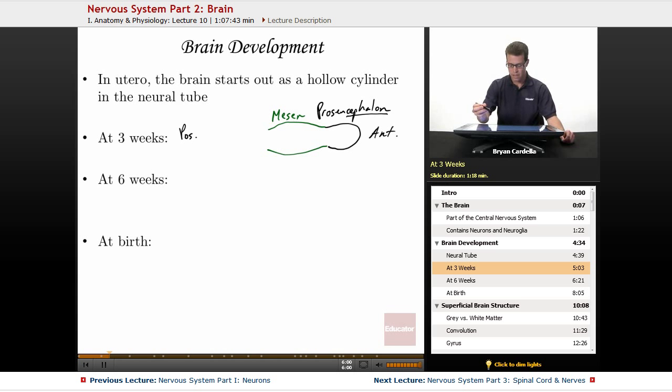And then finally, at the back end, the posterior part, this is the rhombencephalon. And that's at three weeks. Usually before a woman even knows she's pregnant, this has already happened. Prosencephalon, mesencephalon, rhombencephalon.